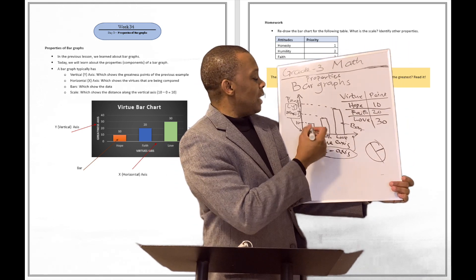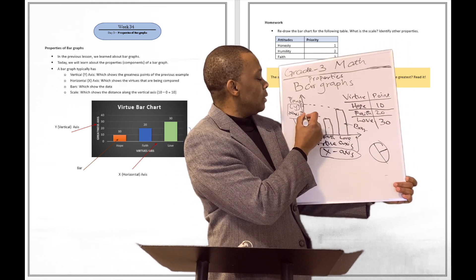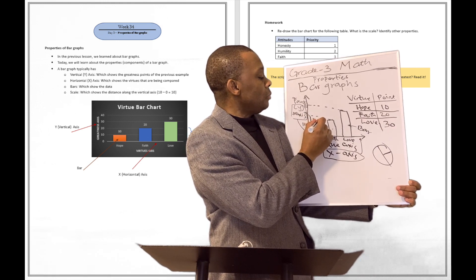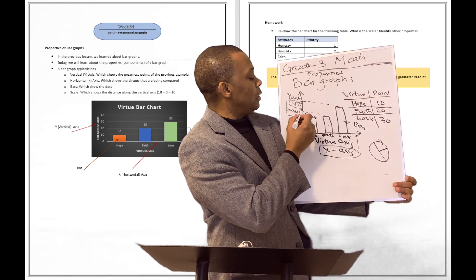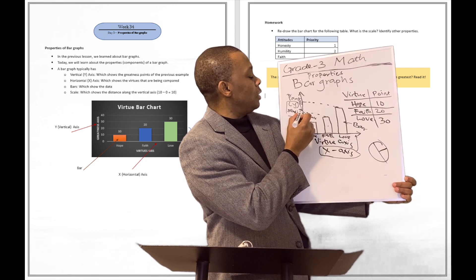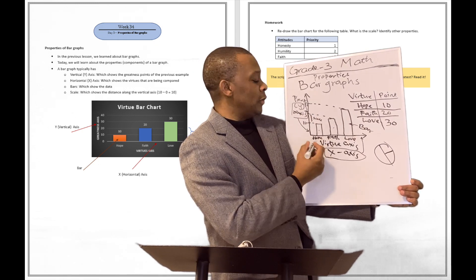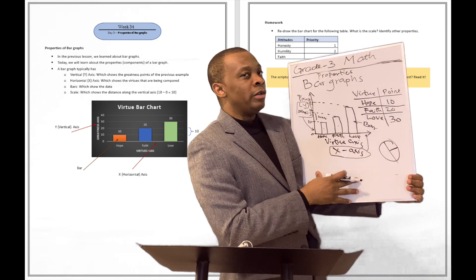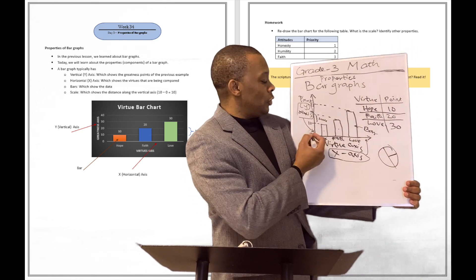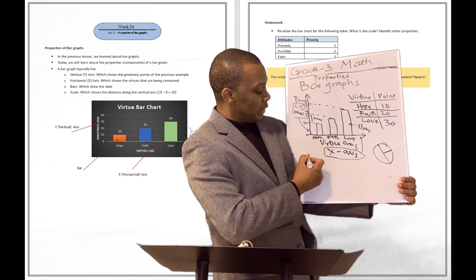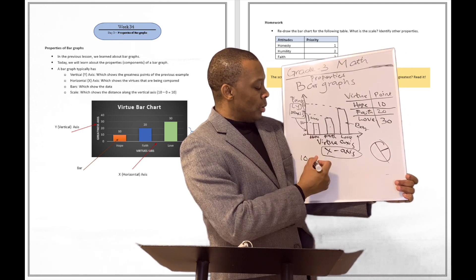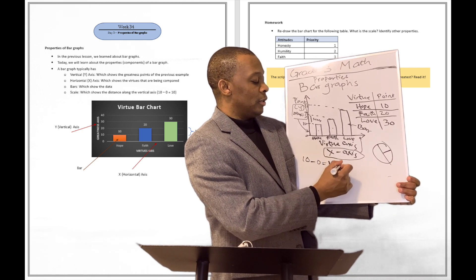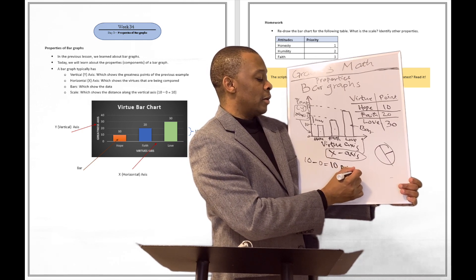And there is going to be something that we can call the scale. The scale tells you the difference between the upper point and the lower point. This is going to start from zero. To know the scale of any bar graph, you take an upper point like 10 minus a lower point like zero. So the scale of this bar graph is going to be 10 points.